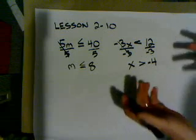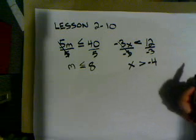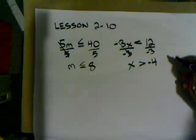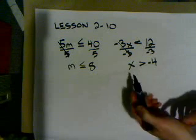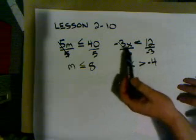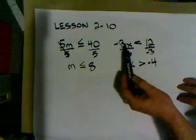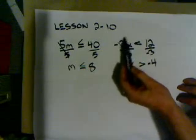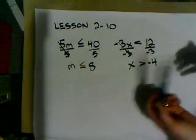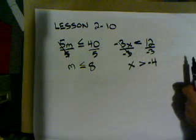We divided by a negative on both sides, so that means we're going to have to flip our inequality symbol. This comes down as a greater than. Then we divide: 12 divided by negative 3 is negative 4. We can check our answer — x is greater than negative 4. So anything greater than negative 4 should work. Let's try 0. Negative 3 times 0 is 0. Is 0 less than 12? Sure is. So we've got our answer.